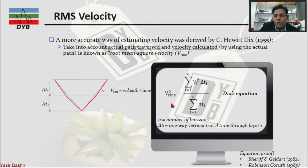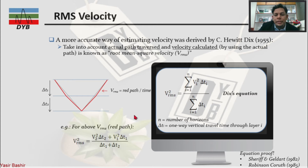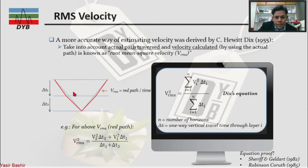The proof of this equation can be found in Sheriff 1982 and Robinson 1985. For the RMS path with two layers, V_rms equals the velocity of the second layer multiplied by the travel time in the second layer, plus the velocity of the first layer multiplied by the travel time in the first layer, all divided by the total time t1 plus t2. This gives you the RMS velocity.